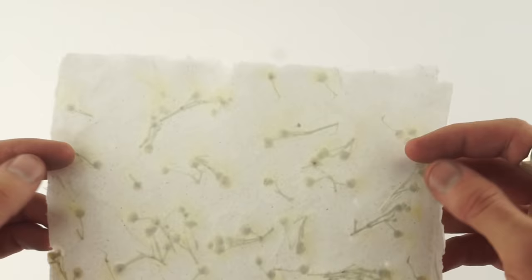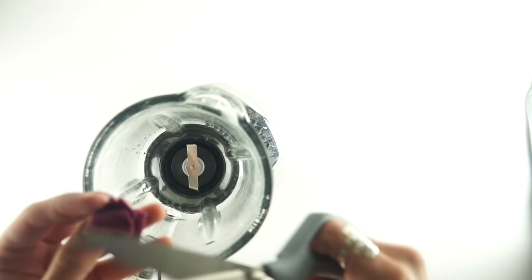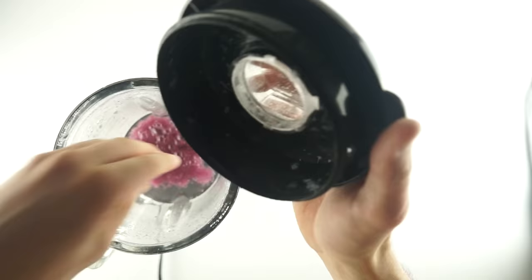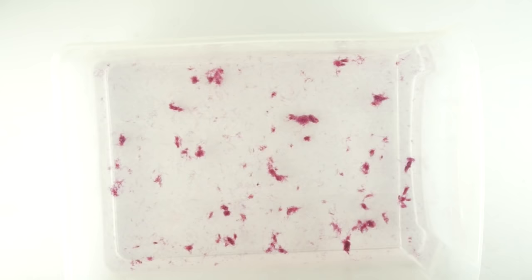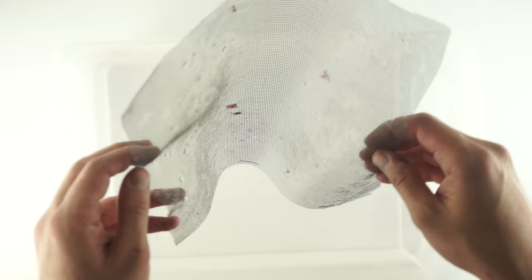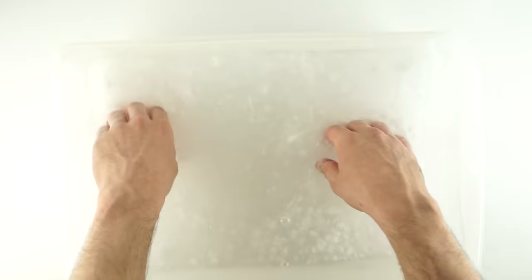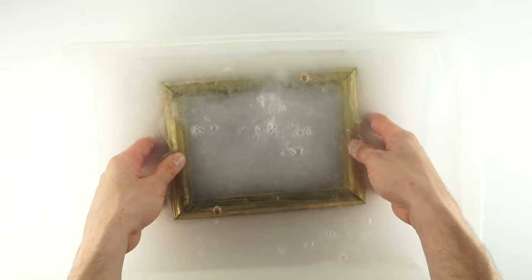It made me think, what else could I put in paper? And I tried some of this felt, just blended it on up. And I put it in water, and then I filtered out the big chunks and added my pulp. Went ahead and strained out the water and let it dry.